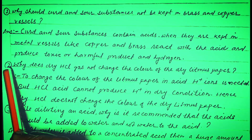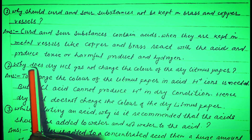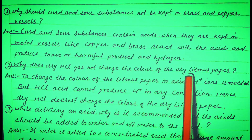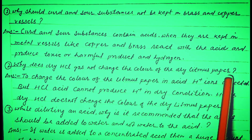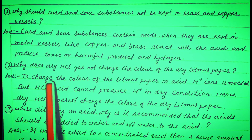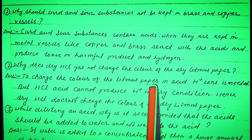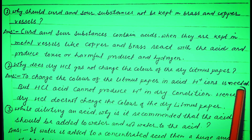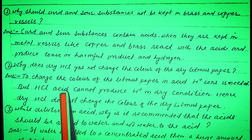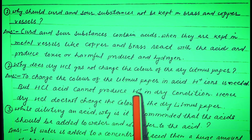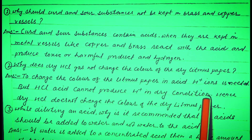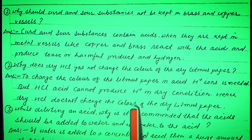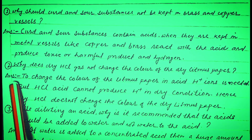Question No. 2: Why does dry HCl gas not change the color of the dry litmus paper? Answer: To change the color of the litmus paper, H⁺ ions are needed in the acid. But HCl acid cannot produce H⁺ ions in dry condition. Hence, dry HCl does not change the color of the dry litmus paper.